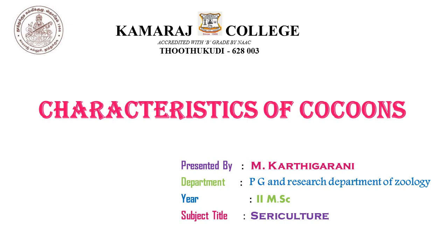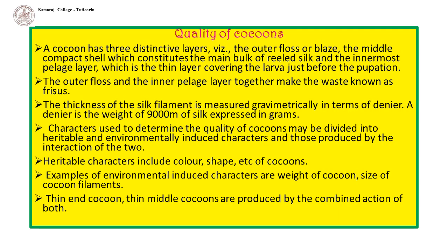We are looking at the characteristics of cocoons. A cocoon has three distinctive layers: the outer floss layer, the middle compact shell — which constitutes the main bulk of reeled silk — and the innermost pelade layer, which is a thin layer covering the larva just before pupation. The outer floss and the inner pelade layer together make the waste known as frison.